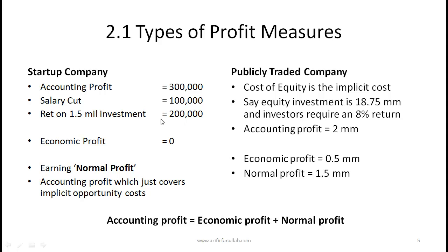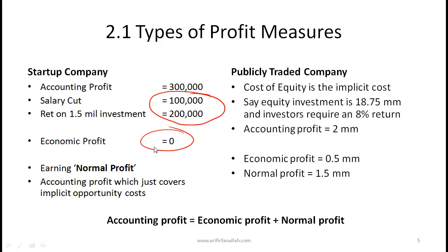Also, you've invested $1.5 million in this business. Had you invested it elsewhere at similar risk, you could get a return of $200,000 — that is also an implicit cost. These two items are implicit opportunity costs totaling $300,000. Therefore, the economic profit is zero: accounting profit of $300,000 minus implicit opportunity costs of $300,000 equals zero.